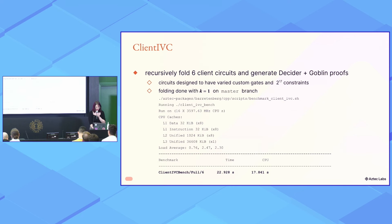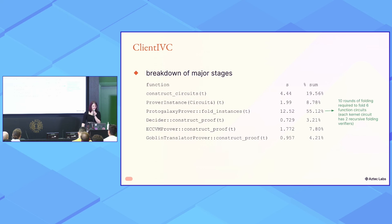Let's see some benchmarks now. So this benchmark was done on Sunday on master for folding only one instance at a time. And we have circuits with 2 to the 17 constraints that are filled. We're using all the 2 to the 17 constraints. And we can fold six circuits in about 23 seconds and also produce the proof of the decider and the two VMs. And by folding six circuits, we're folding six client circuits and then all the kernel circuits that we need to fold on top of this. And a quick look at what takes time. Well, folding takes about 50% of the time. And then we're working on optimizing the construction of the circuit.